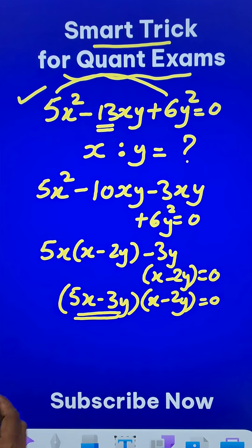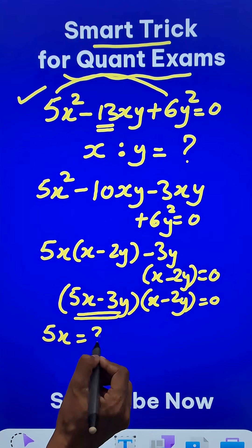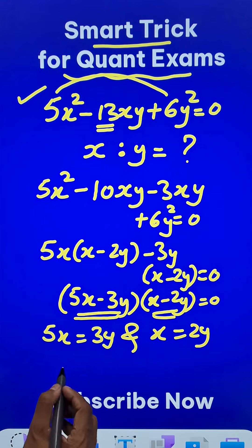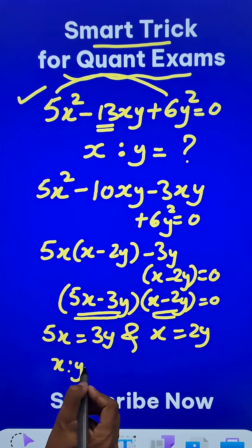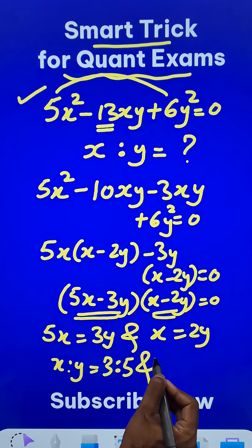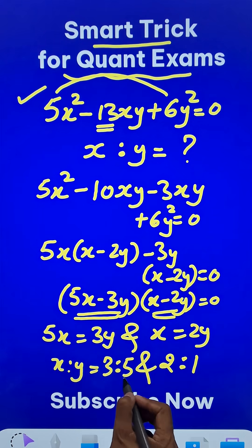So if you equate this equal to 0 you will get 5x equal to 3y and if you equate this equal to 0 you will get x equal to 2y. x upon y or x ratio y comes out to be 3 upon 5 from here or 3 ratio 5, and from here x upon y comes out to be 2 ratio 1 and these are the two possible values for this question.